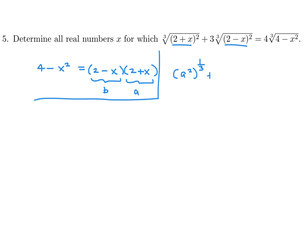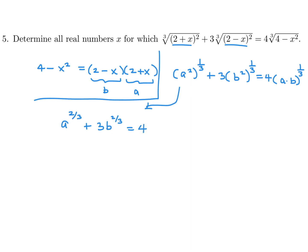So this would basically be a² to the power of 1/3 — because that's what a cube root is — plus 3 times b² to the power of 1/3, equals 4 times a·b to the power of 1/3. So rewriting: a^(2/3) + 3b^(2/3) = 4·a^(1/3)·b^(1/3).